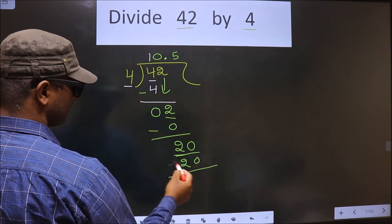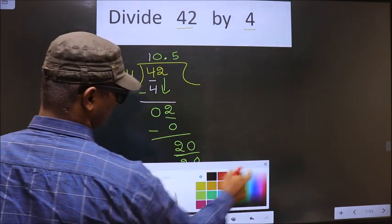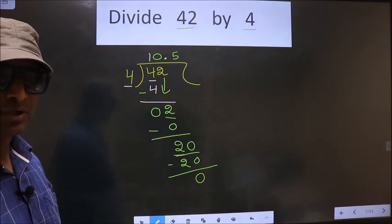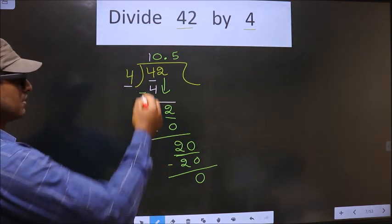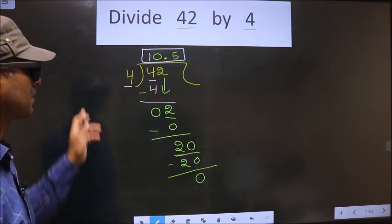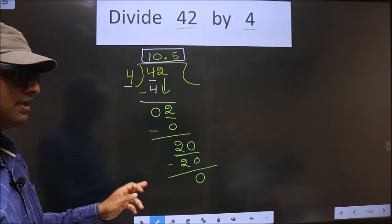So now you subtract, you get 0. Did you understand where many go wrong? So this is our quotient. Am I clear?